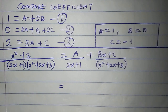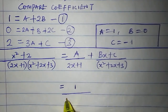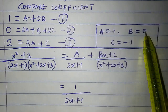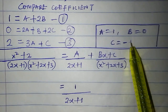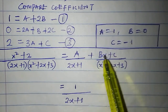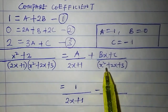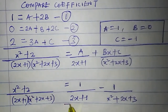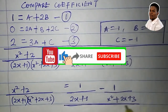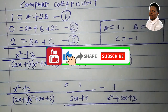So the partial fraction decomposition is: 1/(2x+1) + (0·x + (−1))/(x²+2x+3), which simplifies to 1/(2x+1) − 1/(x²+2x+3). This is the resolution into partial fractions of this compound fraction. I hope you enjoyed the video — like and share it with your friends and course mates. I'll see you in the next one.